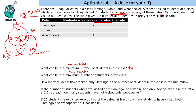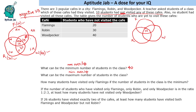The next question asks for the maximum number of students. To maximize, we need minimum overlap — we try to put values in the non-overlapping regions only. Flamingo needs 20, so we put 10 there. Robin needs 30, so we put 20 there. Woodpecker needs 40, so we put 30 there. The total number of students is 10 + 20 + 30 + 10 (center) = 70 students.